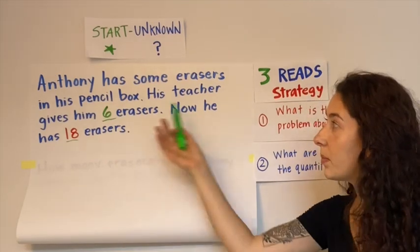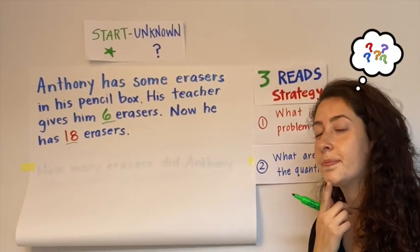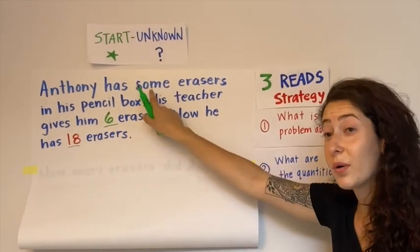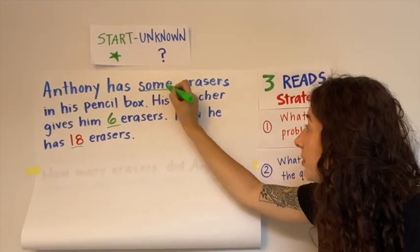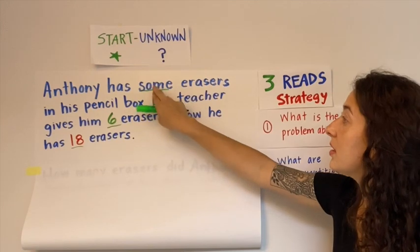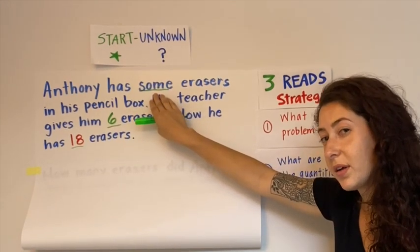So look at the problem. What quantity do you see that is expressed as a word? If you said some, you are correct. Although this is not a number, this problem is telling us that Anthony has some erasers. Some is this unknown number. It is still a quantity that we are going to figure out.